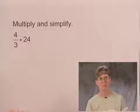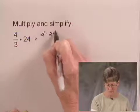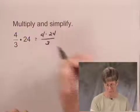We'll multiply numerators and we'll multiply denominators. That means that the product would be 4 times 24 over 3 times 1, or just over 3.